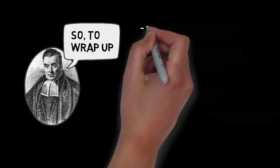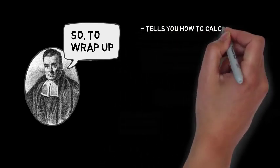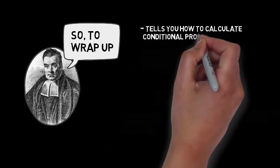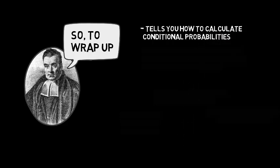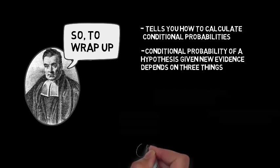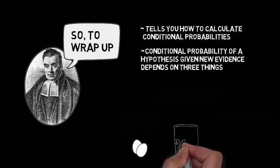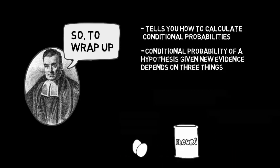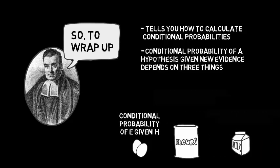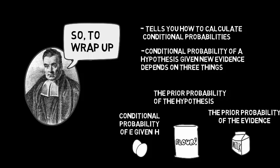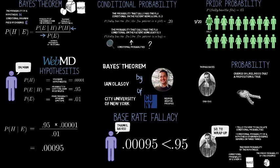Wrapping up then, Bayes' theorem is a formula that tells you how to calculate conditional probabilities, or the probability you should assign to some hypothesis given a piece of evidence. Even if you forget the formula, try to remember that the conditional probability of h given e is determined by three things: the conditional probability of e given h, the prior probability of h, and the prior probability of e. If you leave one of those three things out, you don't have a complete picture.